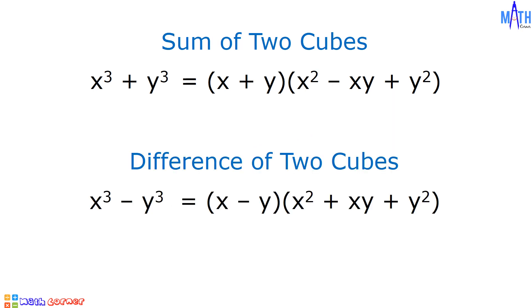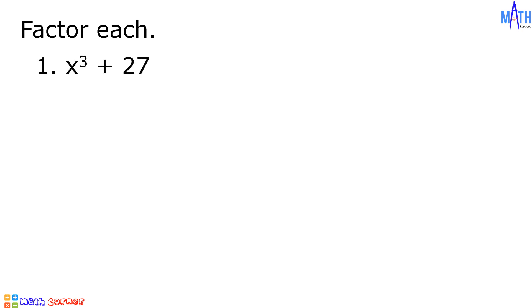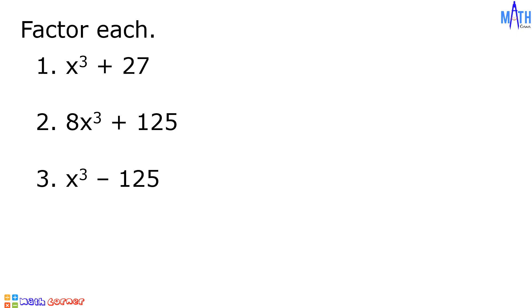These are the patterns in factoring the sum or difference of two cubes. Let us answer some examples. Let us factor: Number 1, x cubed plus 27. Number 2, 8x cubed plus 125. Number 3, x cubed minus 125. And Number 4, 64x cubed minus 343. Let us begin with Number 1, x cubed plus 27.